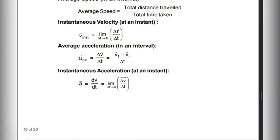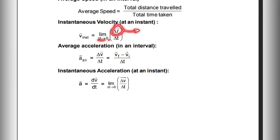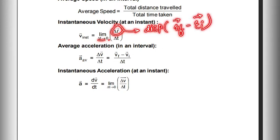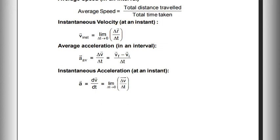Next is instantaneous velocity. Instantaneous velocity is the velocity at any given instant. V instant is equal to the limit as delta t tends to zero of displacement over delta t. We can write displacement as r final minus r initial, divided by delta t. This gives us the instantaneous velocity.